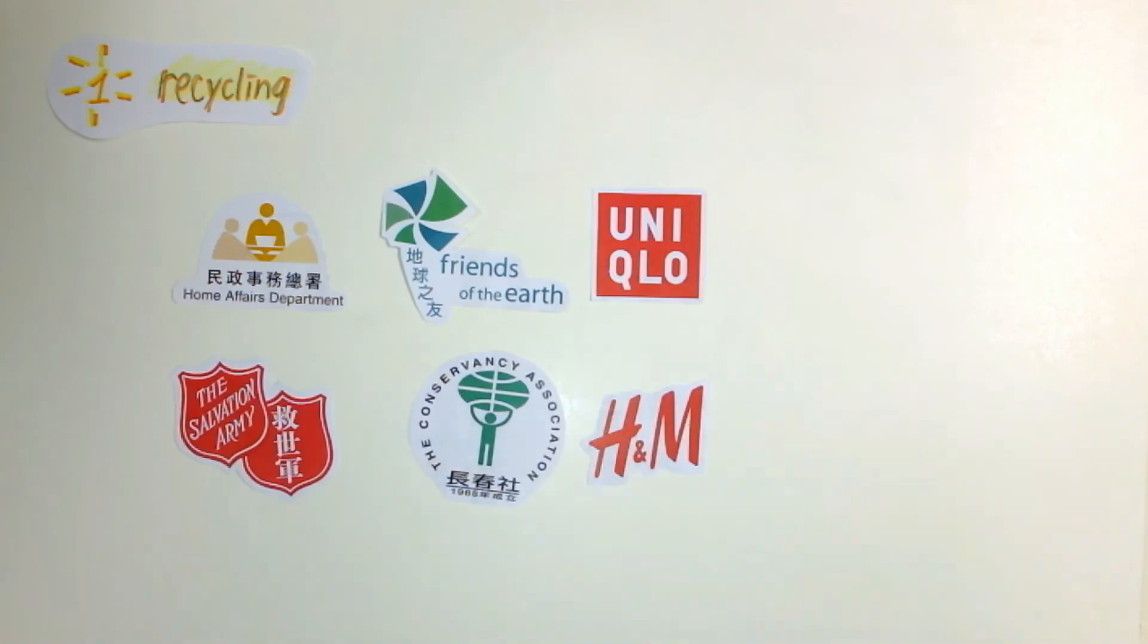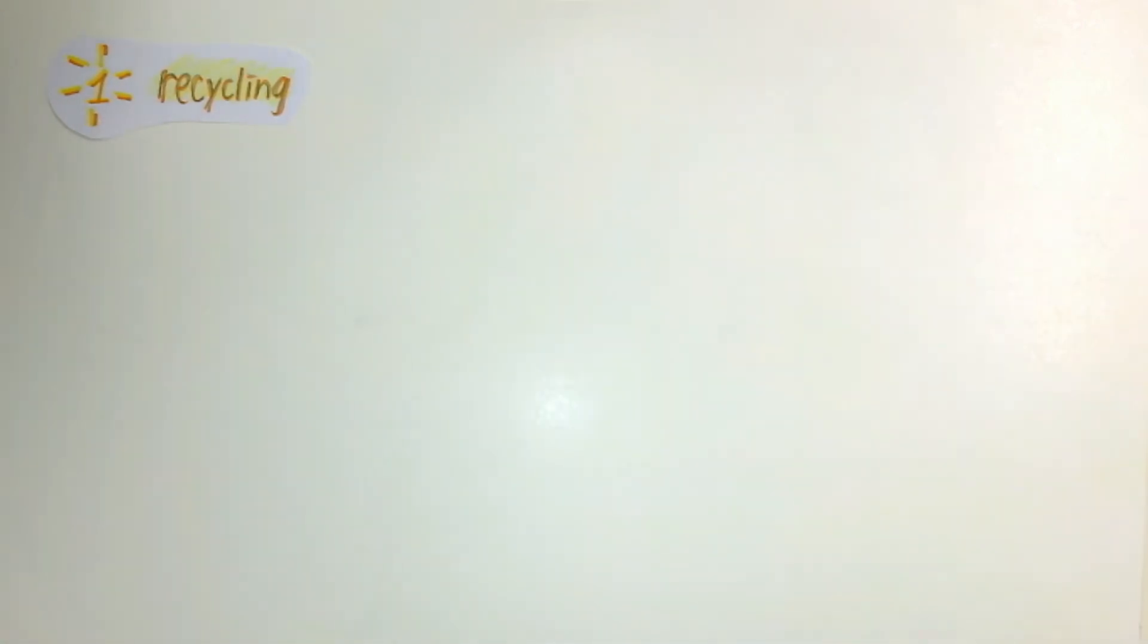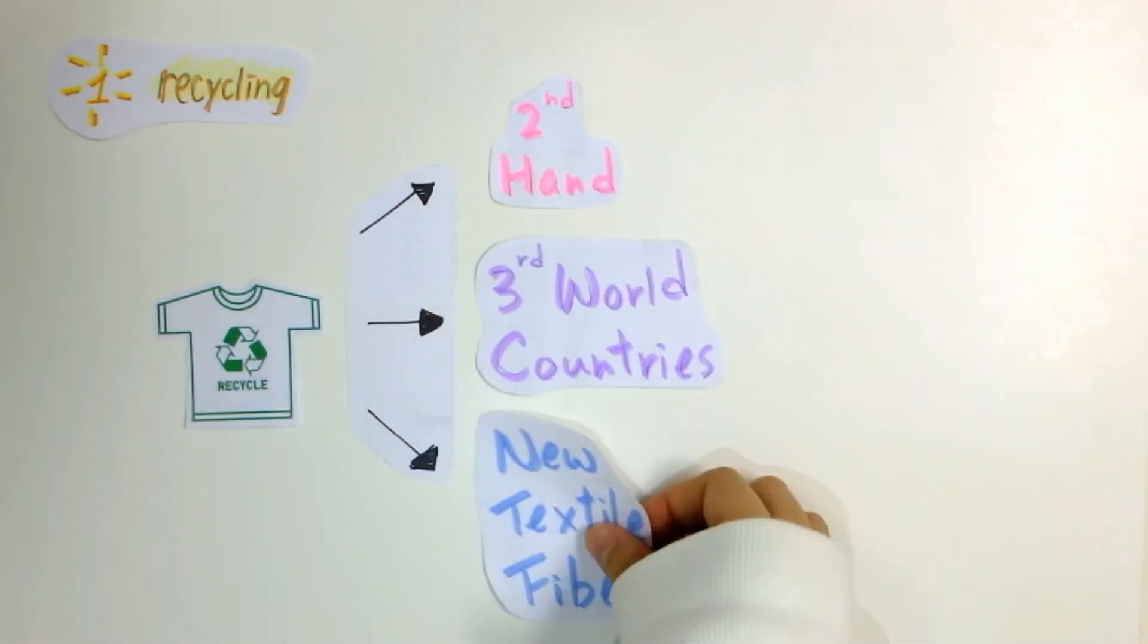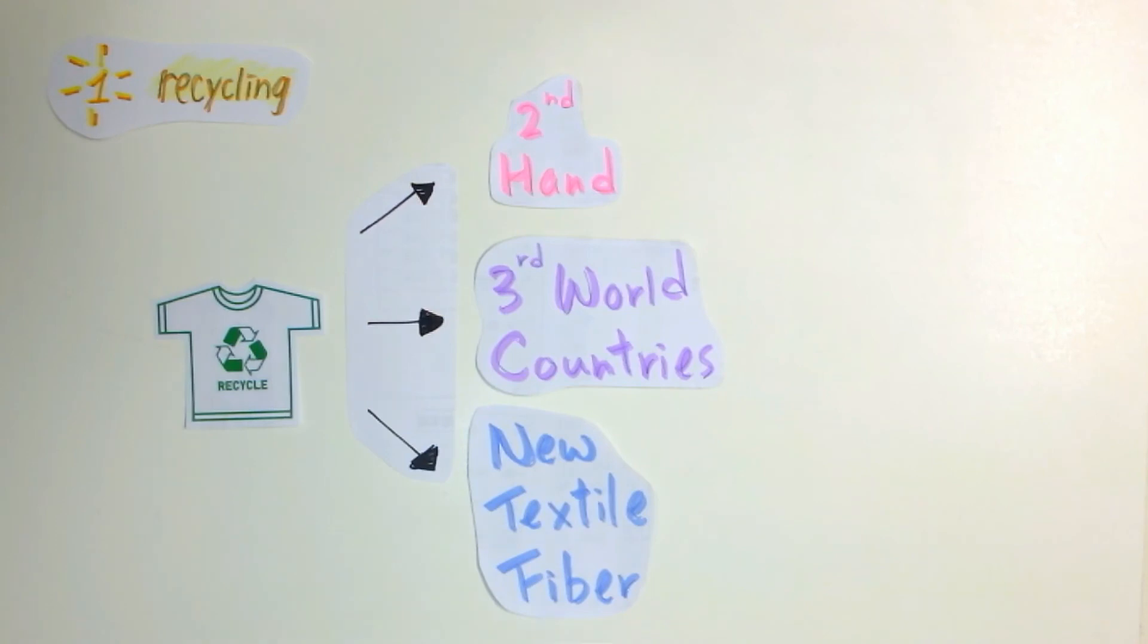Recycling can help reduce the waste of clothing. There are several organizations in Hong Kong that carry out used clothing recycling. The collected clothes will be sold as second-hand clothing, sent to third world countries, or turned into new textile fiber. However, not all collected clothes can be reused.